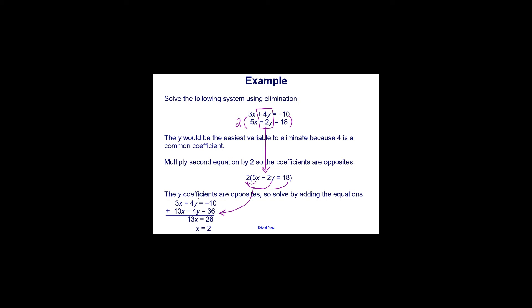We have a positive 4y and a negative 4y, so now we can solve by adding the equations. 3x plus 10x is 13x, and 4y plus negative 4y eliminates to 0y. Then negative 10 plus 36 gives us 26. Dividing both sides by 13, we get x equals 2.